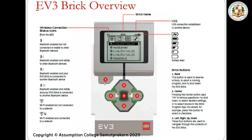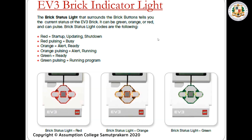Now let's move on to the buttons. Number one is the back button, used to reverse actions, abort or run a program, or even shut down the brick controller. The center button is the OK button, used to select desired settings or select blocks in the brick program. Number three consists of the navigation buttons — up, left, right, and down — used to navigate through the contents of the EV3 brick controller.